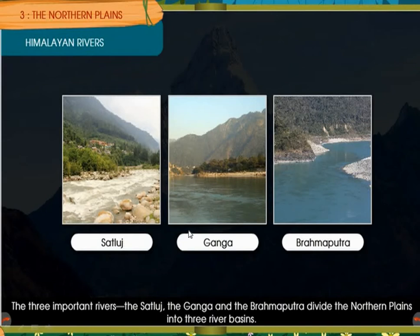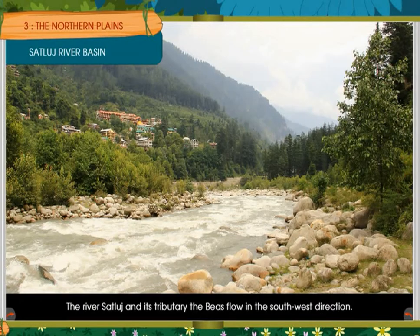First we will learn about the Satluj Basin. A basin is an area watered by a river and its tributaries.